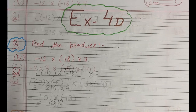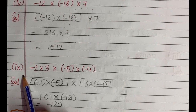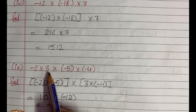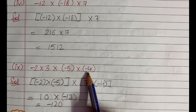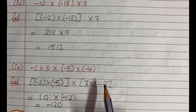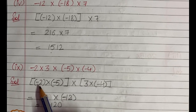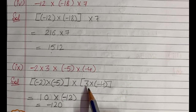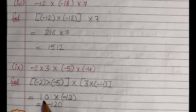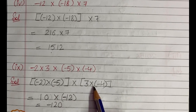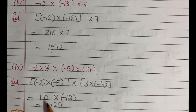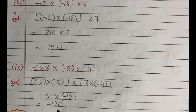Fourth part is clear. Next, I have taken the 9th part of the same question. In the 9th part, we are having 4 integers: (-2) × 3 × (-5) × (-4). I will take groups of 2 integers each in brackets. First bracket: (-2) × (-5) = 10. Second bracket: 3 × (-4) = -12. Then 10 × (-12) = -120 as the answer.